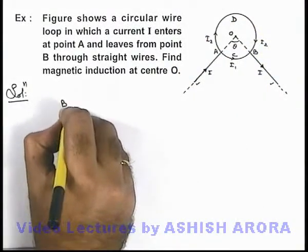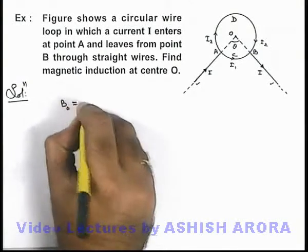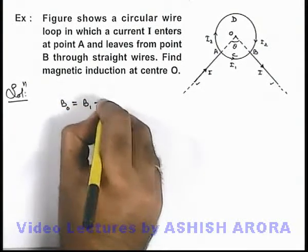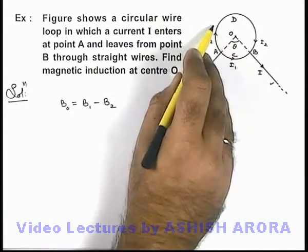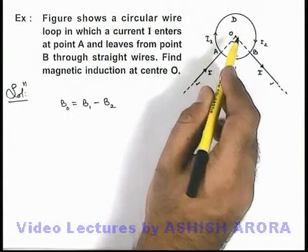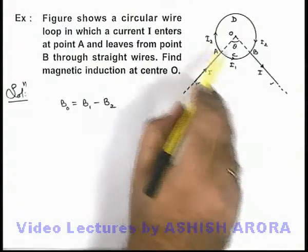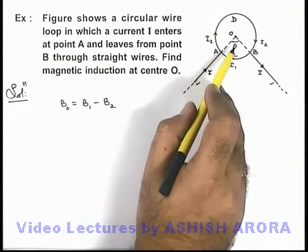So we can write net magnetic induction at point O will be B1 minus B2 if B1 is the magnetic induction due to current i1 and B2 is the magnetic induction which we can calculate by using the result of circular arcs.